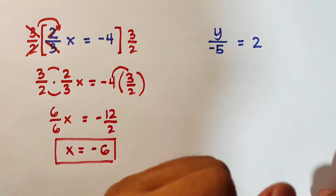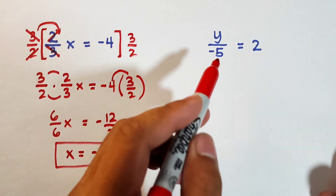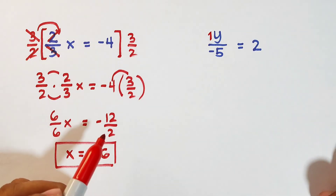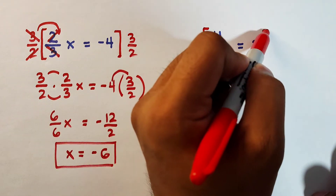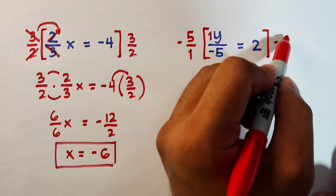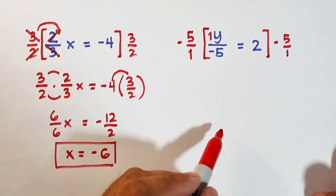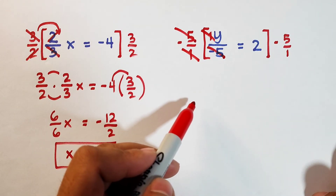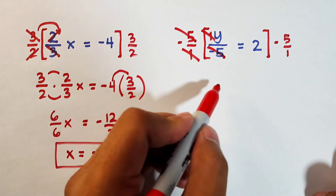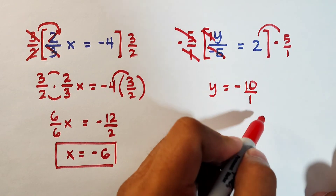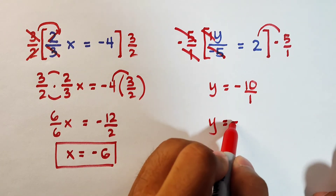Now let's move on with example number 4. We have y over negative 5 is equal to 2. Imagine that you have 1 here, so your fraction is negative 1 over negative 5. What we need to do is multiply using its reciprocal, which is negative 5 over 1. Multiply both sides by negative 5 over 1. Cancel this out, cancel this out — negative times negative is positive, so what remains is y. Then 2 times negative 5 is negative 10 over 1. Simplifying, y is equal to negative 10.